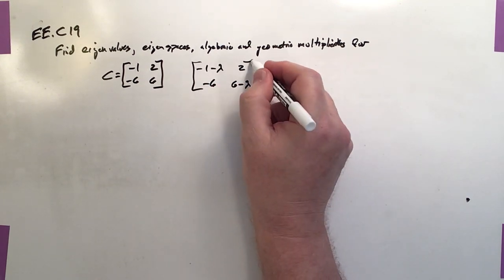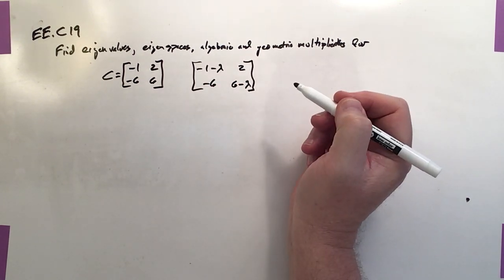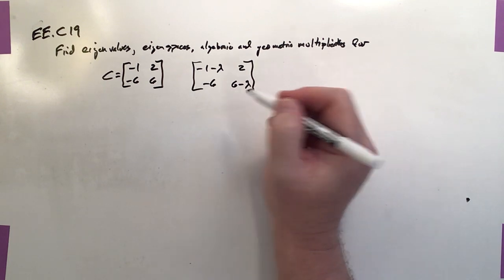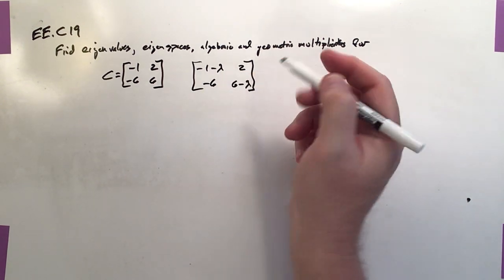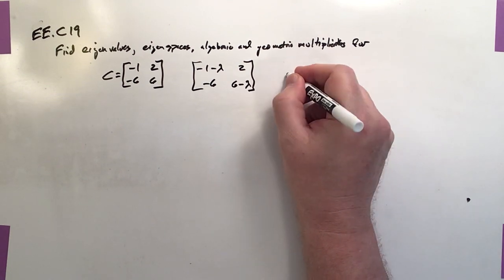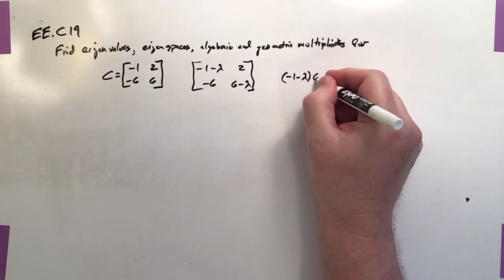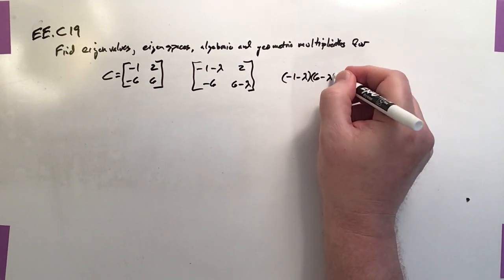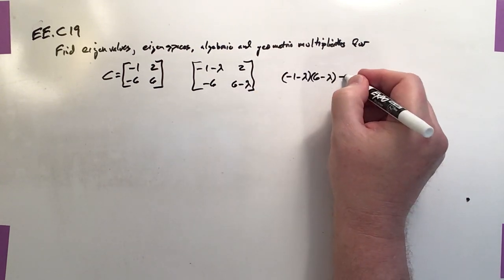So this would be the matrix that will give us the characteristic polynomial. So the characteristic polynomial is going to be negative 1 minus lambda times 6 minus lambda, and then that plus 12.